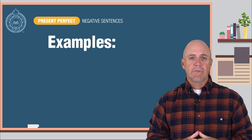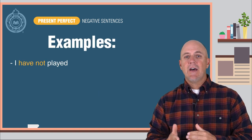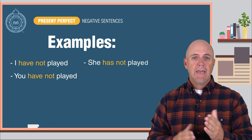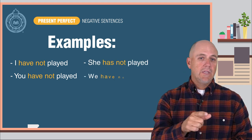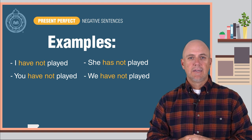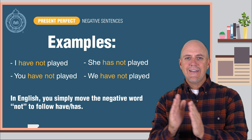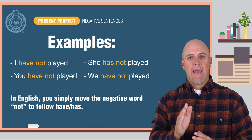Let's look at some examples. I have not played. You have not played. She has not played. We have not played. So as you can see, in English, you simply move the negative word not to follow have or has.